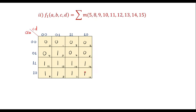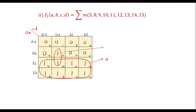Now we do the grouping. The four 1s in the bottom rows and the four 1s adjacent to them together form an 8-cell group. Since it covers all columns, the column factor is 1. Looking at the rows, the common factor is A, so this group gives term A. Cells 5 and 13 form a pair; the common row factor is B and the column gives C̅D, yielding BC̅D. Therefore F1 = A + BC̅D.